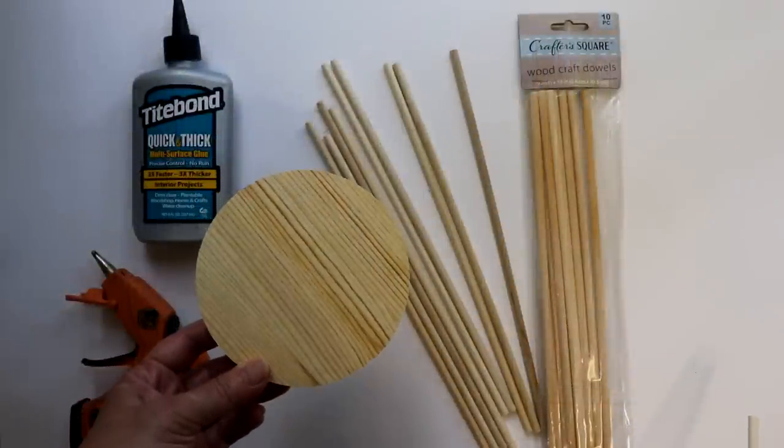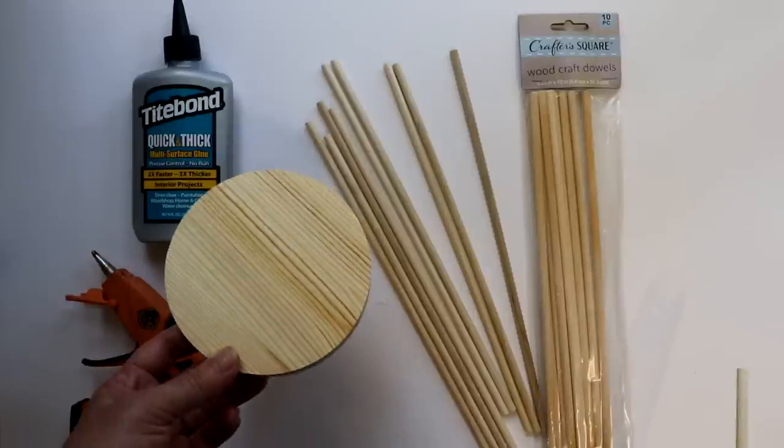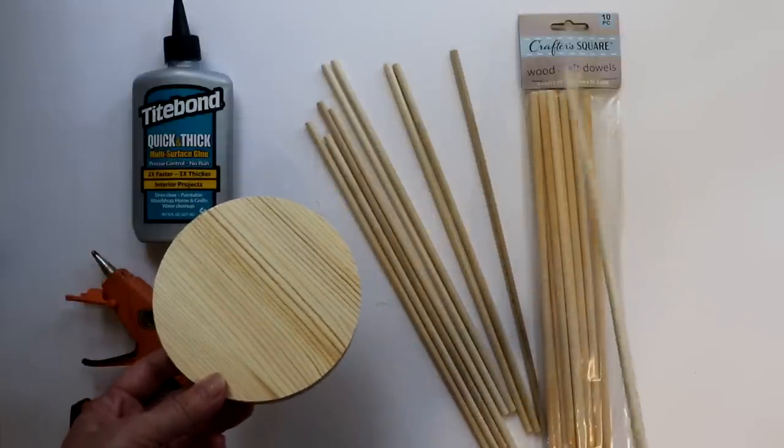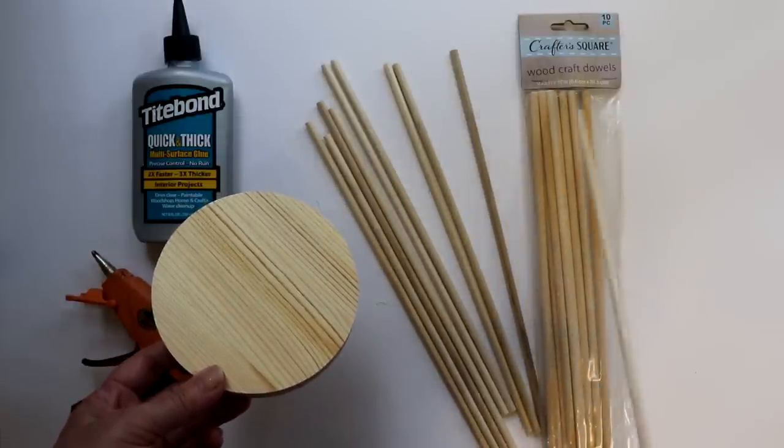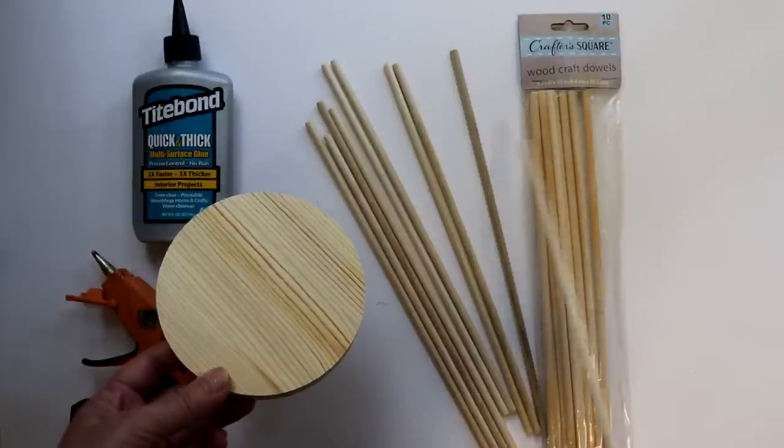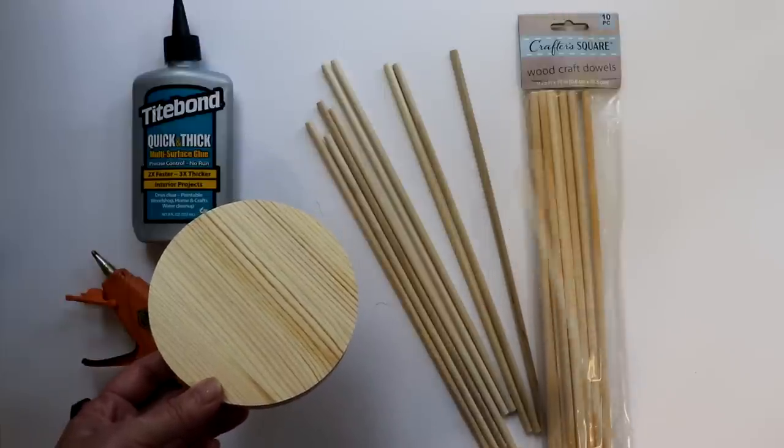For the dollar dupe version, I'll be making a smaller scale lantern with craft wood rounds and 12-inch dowels. But at the end of this project, I'll share a larger scale lantern I made using Dollar Tree long barbecue skewers, which stands 31 inches tall and is actually larger than the Restoration Hardware Lantern.